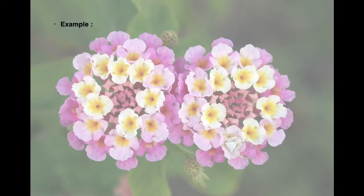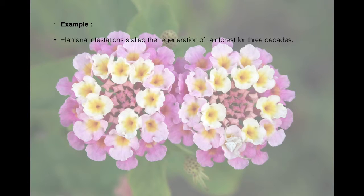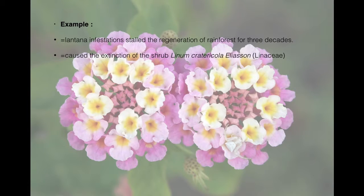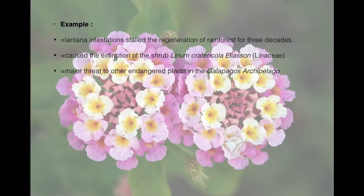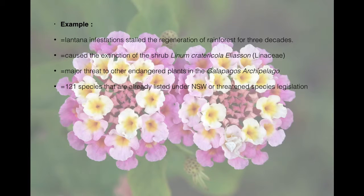At some sites, Lantana infestations have completely stalled the regeneration of rainforests for 3 decades. Lantana caused the extinction of the shrub Linum cratericola and poses a threat to other endangered plants in the Galapagos Archipelago. Additionally, 176 species of plants and animals have been identified as potentially affected under the EPBC Act due to Lantana, including 121 species already listed under NSW Threatened Species Legislation.